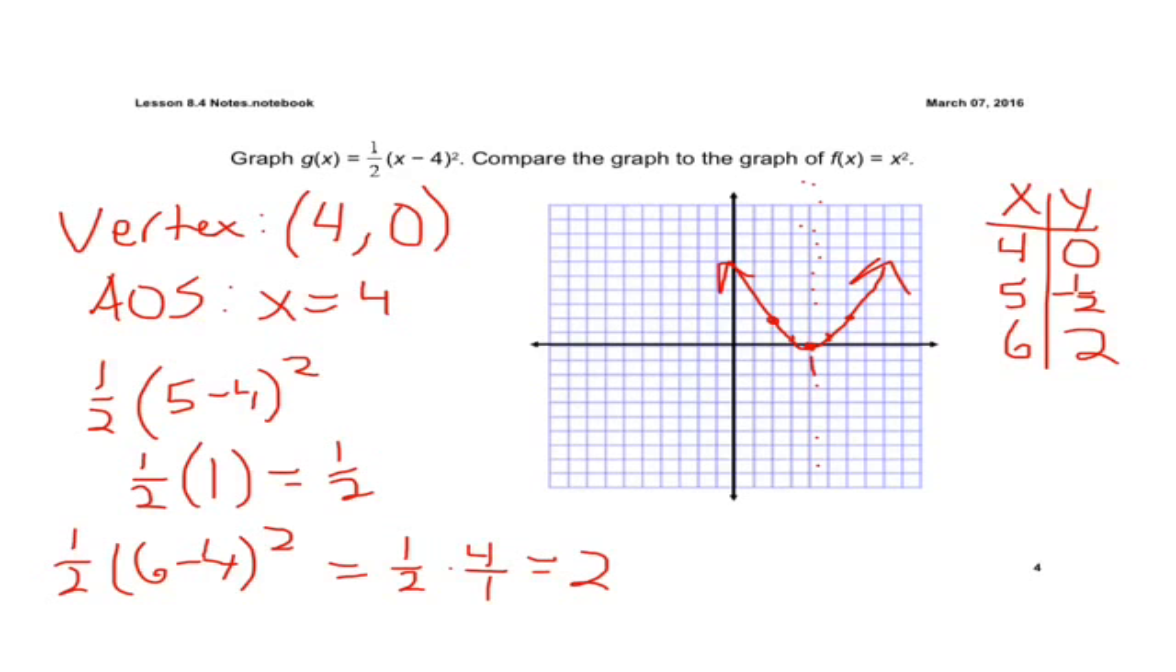And we have our parabola. Okay, if we do a little check, it's a little wider, that's good, because our a value is less than 1, greater than 0. So it's a vertical shrink. It opens up, like we said, and it moves to the right 4, because this minus 4 shifts it to the right 4 units. All right.